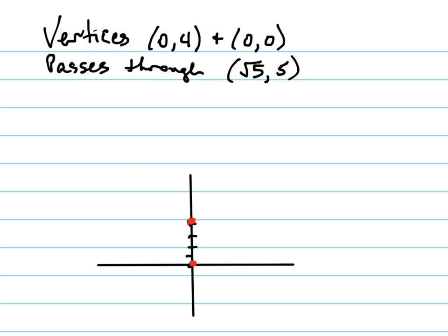Those are my two vertices right there, and it passes through, so it's going to be something... It passes through the point √5, which is bigger than 2, so it's somewhere over here. This is like the √5 is somewhere there, and up 5, so 5 is up here. So the point that it passes through right here is (√5, 5).